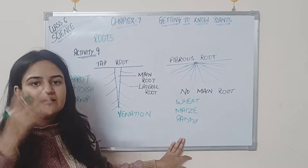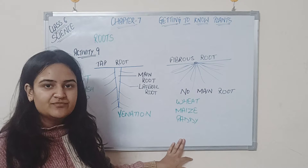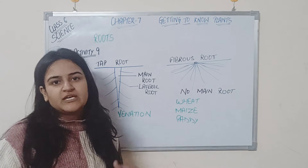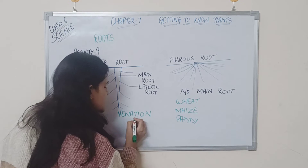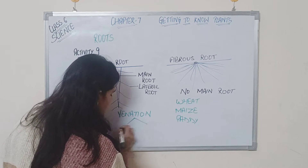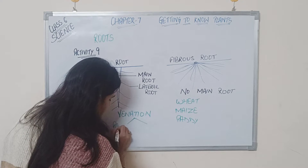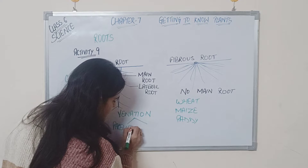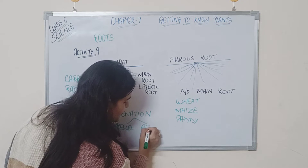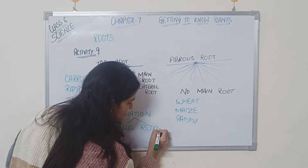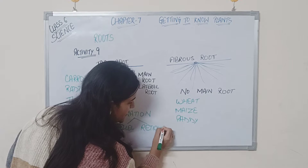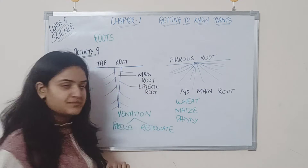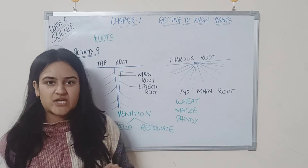It can be either in parallel way or in a messy overlapping-each-other way. There are two types of venation: parallel and reticulate. I have already explained this very well in the previous video. I will link it up in the description below — you can just check it out.